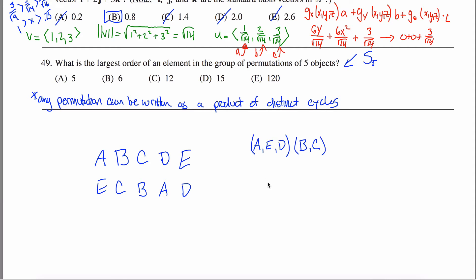You can write any permutation as a product of distinct cycles — that fact is what you need to answer this question, because you don't want to consider all elements individually. S5 has 120 elements, since 5! = 120. You have five choices for where A goes, four for B, three for C, and so on.